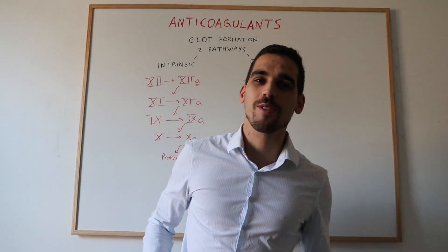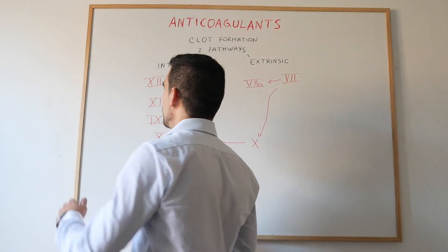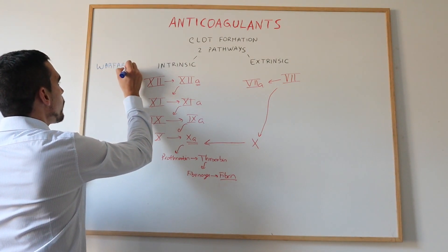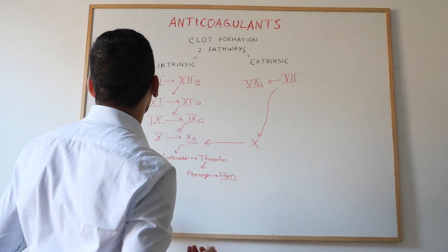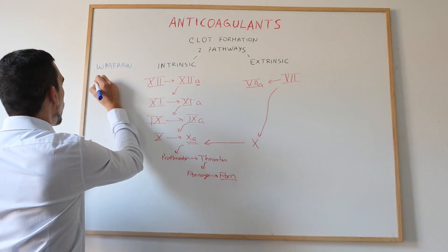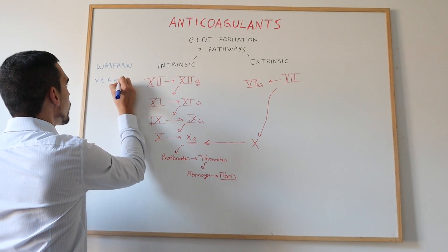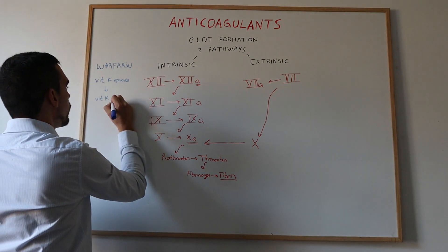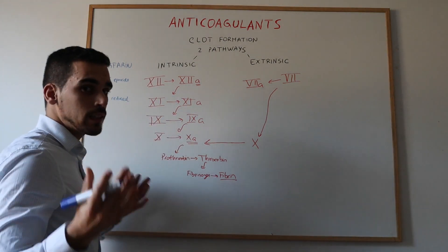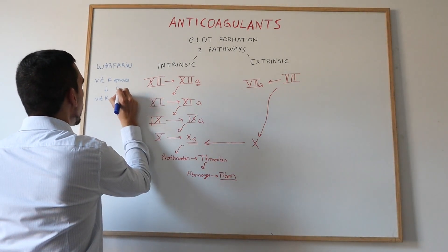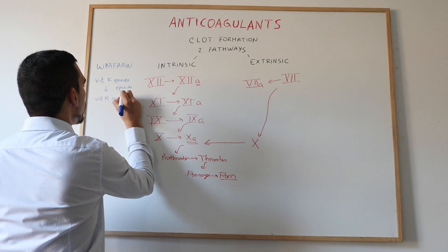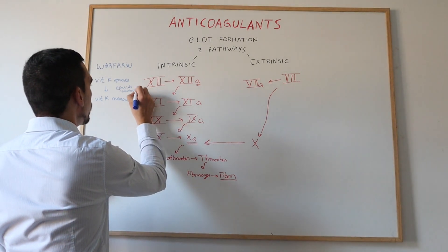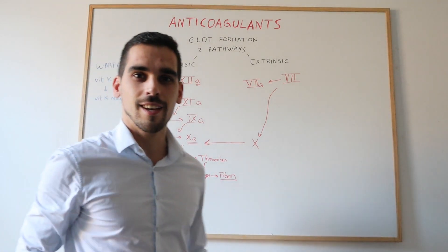Now let's talk about one of the most used anticoagulants: warfarin. Warfarin is responsible for preventing the activation of vitamin K epoxide into vitamin K reduced. This is done by blocking an enzyme called epoxide reductase, so the vitamin K doesn't get reduced.